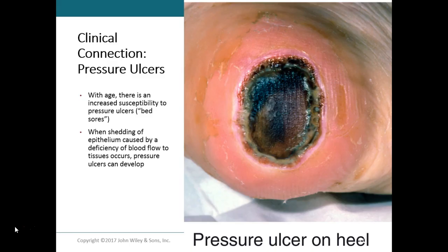Pressure sores, or bed sores, are caused by a constant deficiency of blood to tissues overlying a bony area that has been subjected to prolonged pressure against an object such as a bed, cast, or splint. The lack of blood supply results in tissue ulceration. The shedding of epithelium caused by that blood deficiency causes the sore to develop. In patients confined to a bed, if they are not moved and turned properly, these wounds may become very extensive and infected before anyone notices.